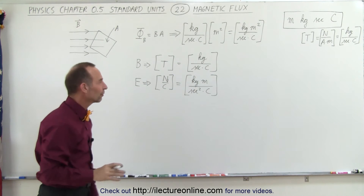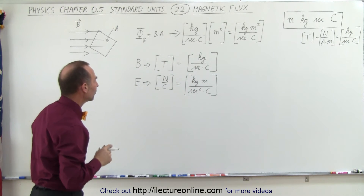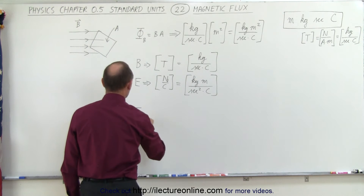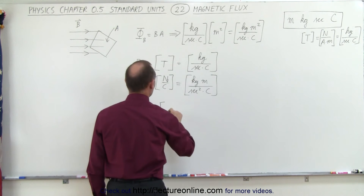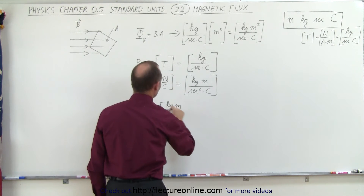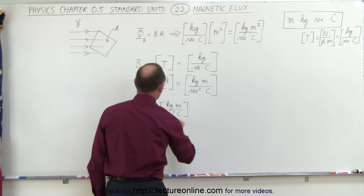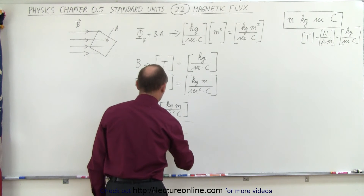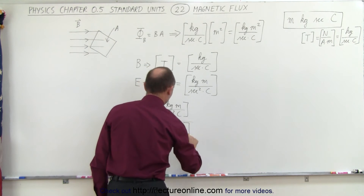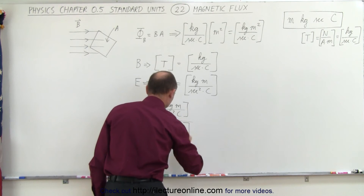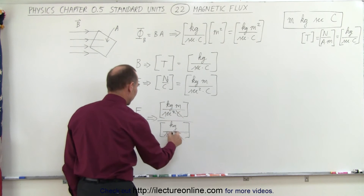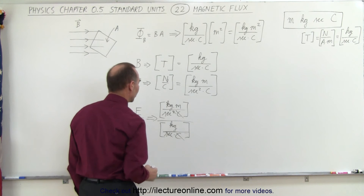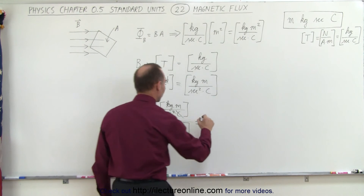Now we're going to divide the electric field units by the units of the magnetic field — electric field divided by the magnetic field. Taking the numerator: kilograms times meters per second squared times coulombs, and in the denominator: kilograms divided by seconds times coulombs. Notice that the coulombs cancel out, one of the seconds cancels out, and the kilograms cancel out, which leaves us with meters per second.